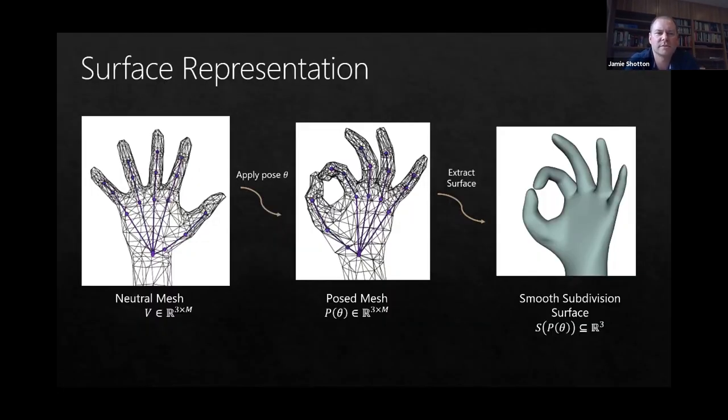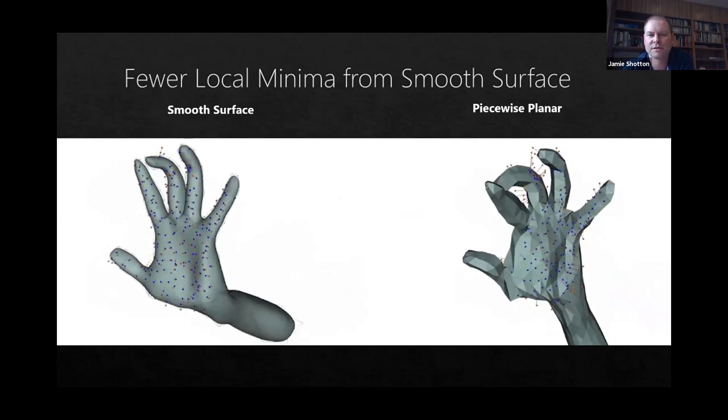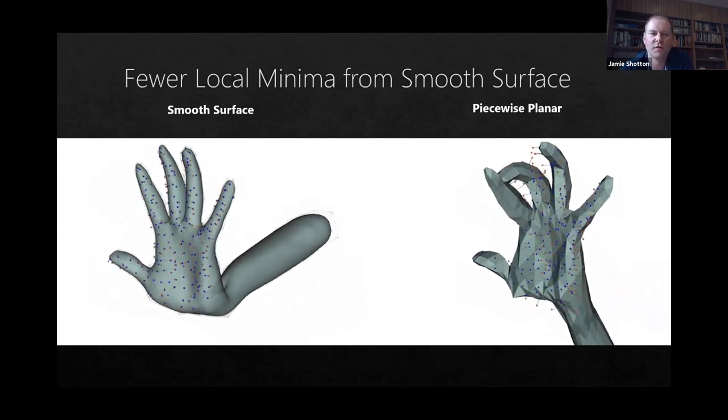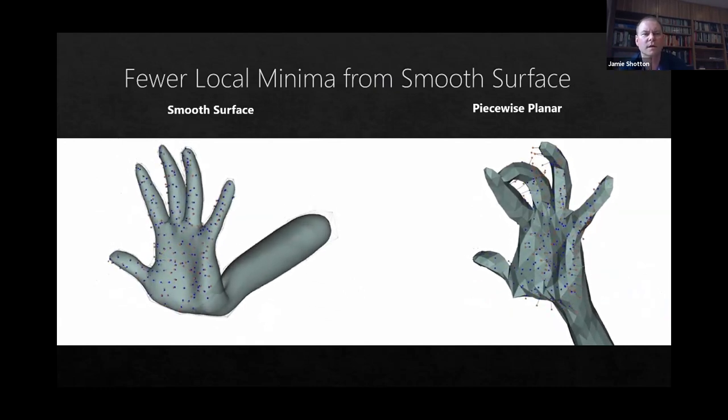How did we do that? A couple of themes in this work. One was a use of a smooth subdivision surface representation for our model. We take a neutral mesh, we'd be able to pose that with some parameter vector theta. And then from that posed mesh, we can generate a smooth subdivision surface, which is where our model energy, our model fitting energy, we're trying to align the data to. And one of the benefits of this is you get fewer local minima in your optimization. Comparing to say a piecewise planar surface on the right here, we were able to fit the data much more reliably with much fewer local minima and converge to a decent solution from quite a wide basin of convergence.